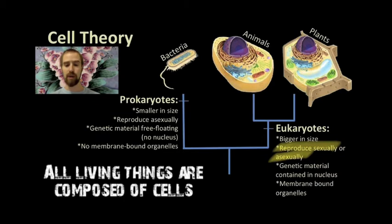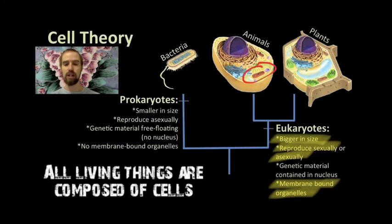Eukaryotic cells are bigger than prokaryotic cells, and eukaryotes also have membrane-bound organelles. That's what all of these little structures are. And they also have a cell nucleus that protects the cell's genetic information.